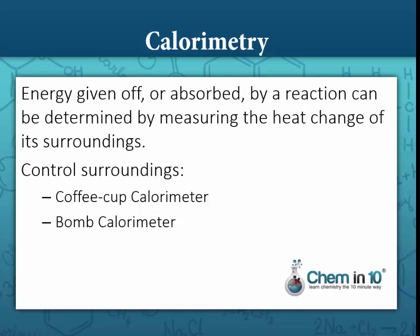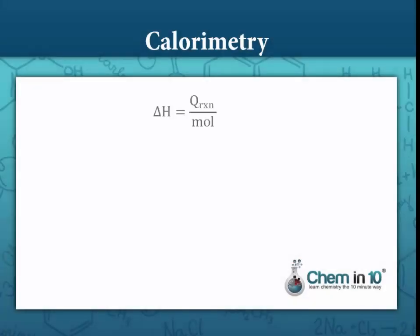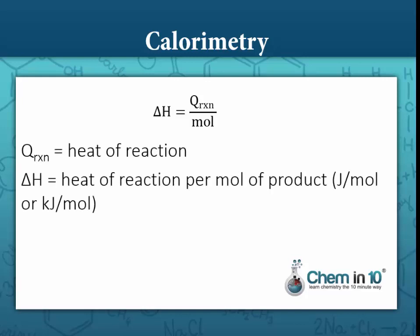There are two different types of calorimeters, but in this lesson we'll cover only the coffee cup calorimeter. A more professional calorimeter would be a bomb calorimeter, which can withstand very high pressures. The heat given off or absorbed by a reaction is Q, and we calculate enthalpy by dividing Q by moles — so enthalpy is heat per mole, typically in joules per mole or kilojoules per mole.